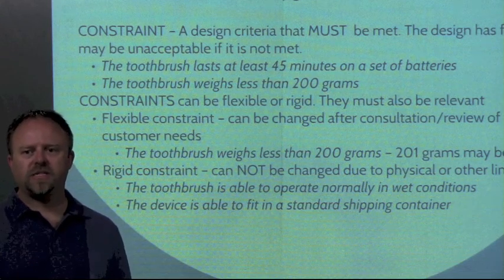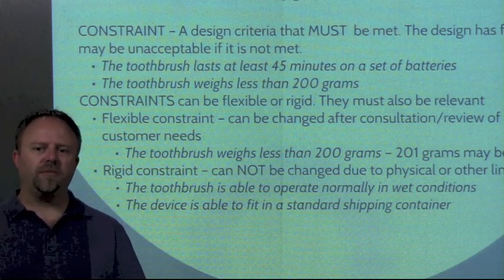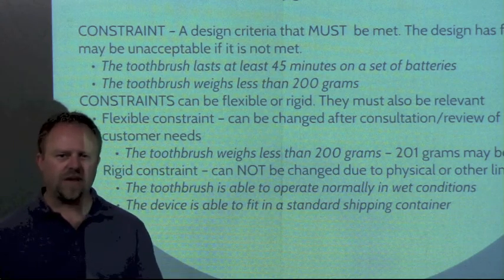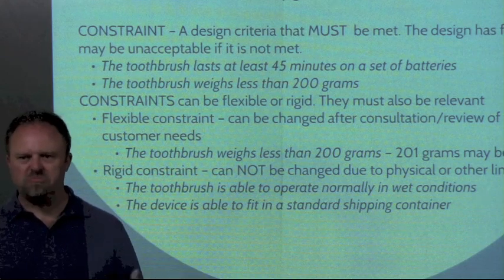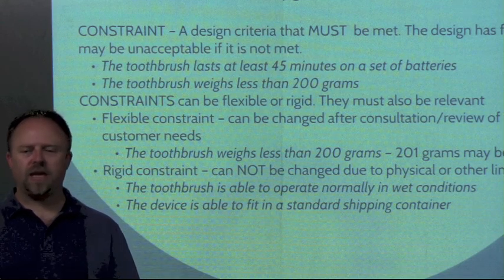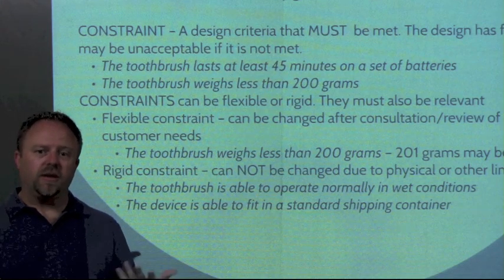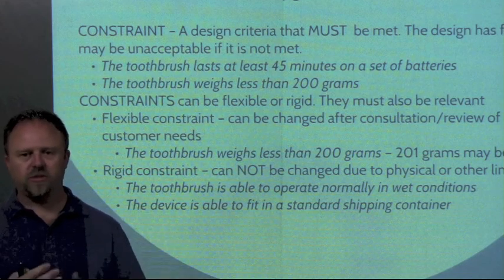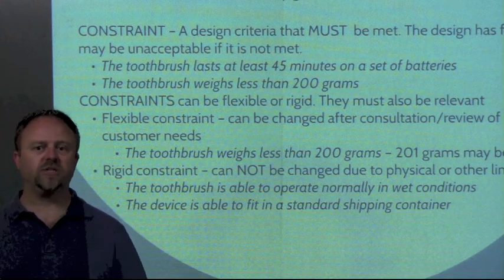We can have goals and constraints related to the same thing — that's okay. We're just saying it has to weigh less than a certain value, while our goal was that it weigh as little as possible. Now these constraints could be flexible depending on the type. For example, if it weighed 201 grams, that's probably not a big deal. But a rigid constraint might be that the toothbrush has to work when wet, or that it has to fit in a specific shipping container — we can't exceed that size, so those are rigid constraints.